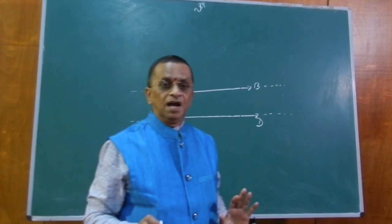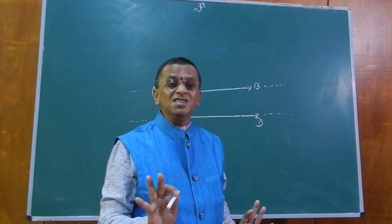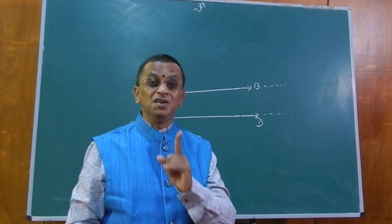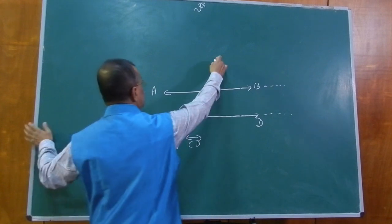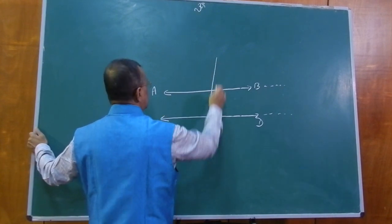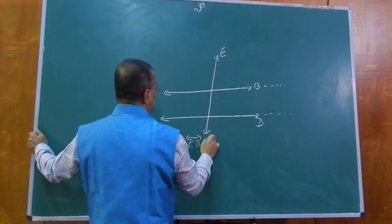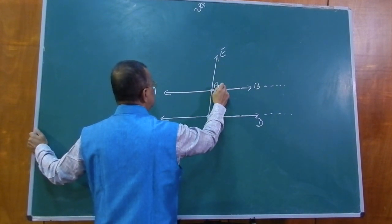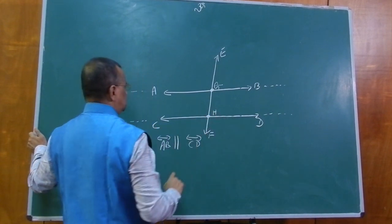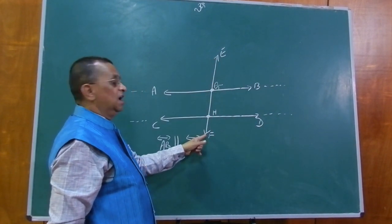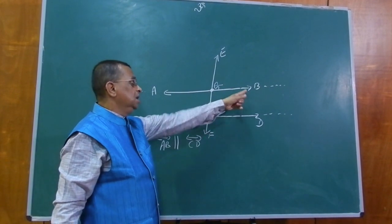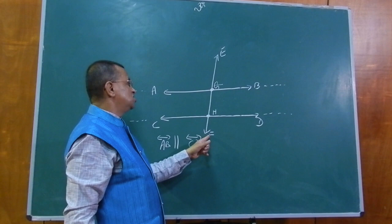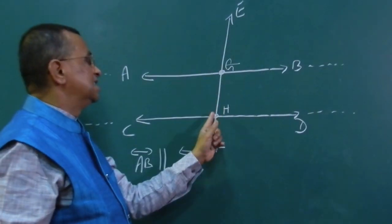Let us know about the transversal line. A transversal line is a straight line which intersects any two parallel lines. Now I will draw a transversal line — EF is a transversal line which is intersecting two parallel lines AB and CD at G and H respectively. Therefore, we call EF a transversal line. Here, AB is parallel to CD, and EF is a transversal line which intersects AB at G and CD at H.